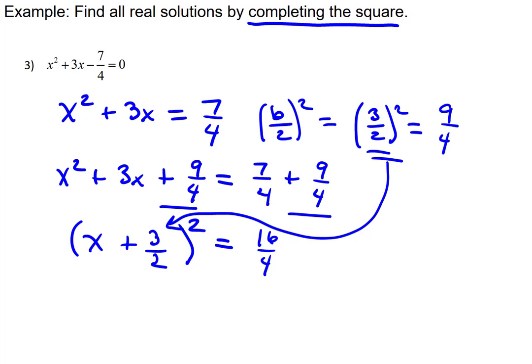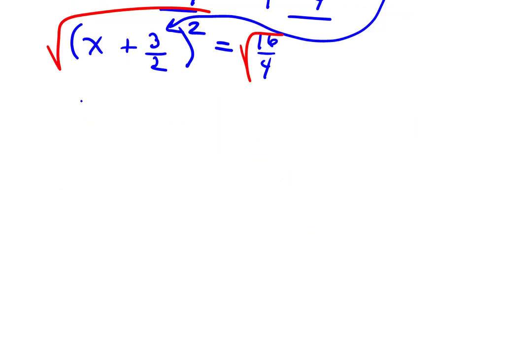Now, we're kind of where we were at the first problem in this set, where we used the square root property to unsquare both sides. This will give us x + 3/2 = ±4/2. That's the square root of 16 over the square root of 4. Of course, that's reducible, so we should reduce it. This means x = -3/2 ± 4/2.